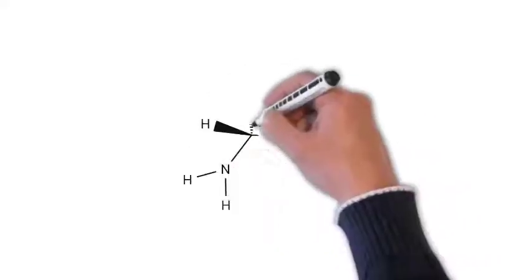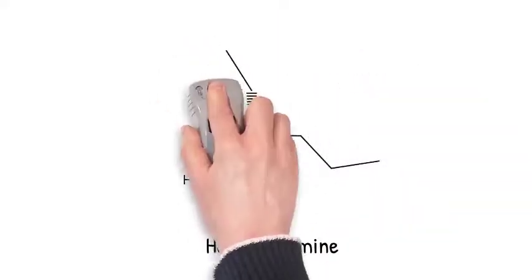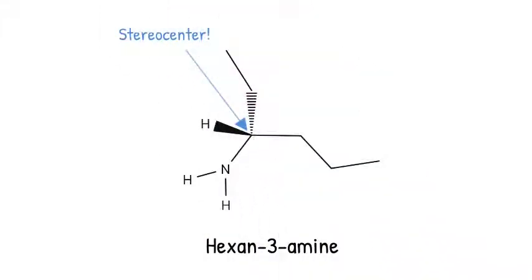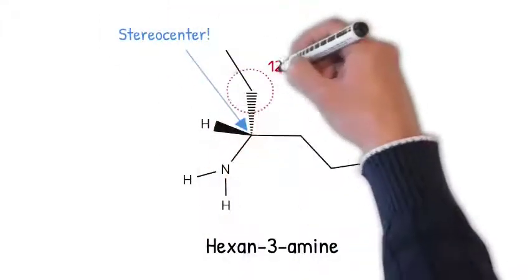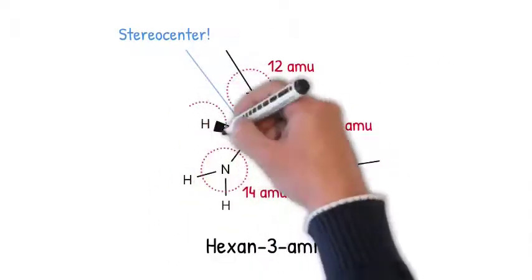Let's use this molecule as an example to figure out how to go about applying the CIP rules. Since it does have a stereocenter, identify the priority of each of its substituents by labeling each atom it is bound to in descending order of atomic mass.